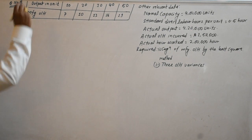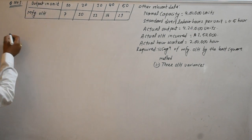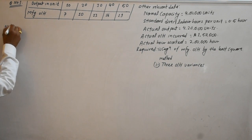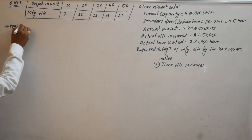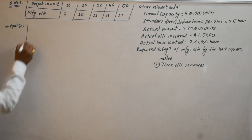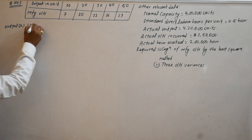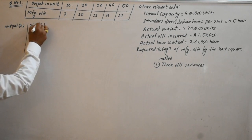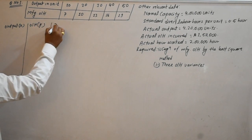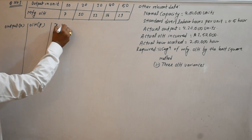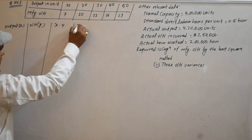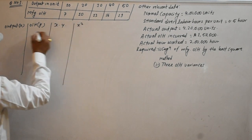We have a table with all data points. We have columns: x times y, and x squared.